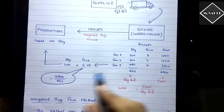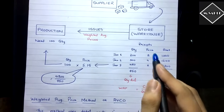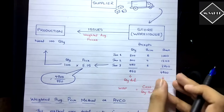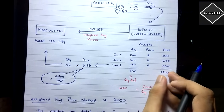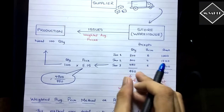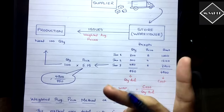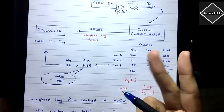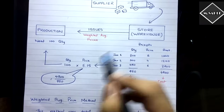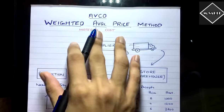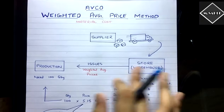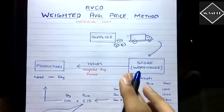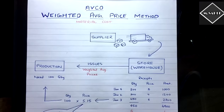Unlike the Simple Average Price method, here we take both quantity and price into account — because cost contains both the price and quantity elements, and you divide by quantity. Both factors are taken into consideration, which is why it is called the Weighted Average Price method.